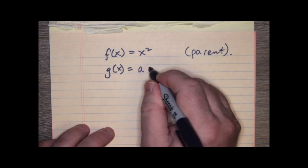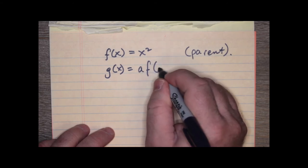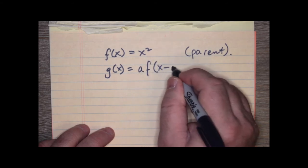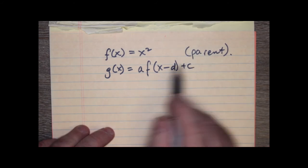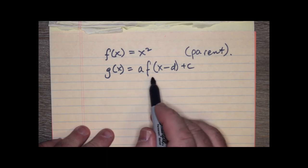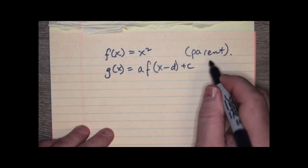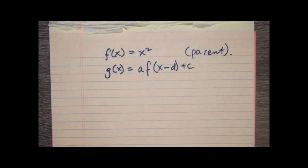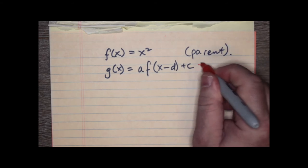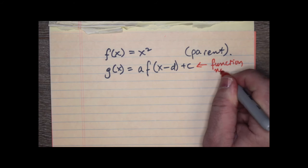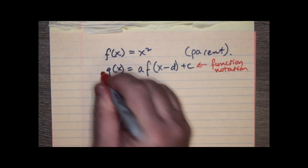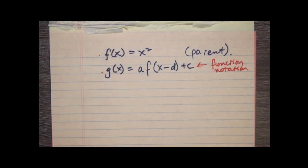And we said that it was a, f of x minus d plus c. So, this is what we're transforming. Notice that this is only using function notation. That's an important thing to know. This is function notation. Just like this is function notation, and that's function notation.